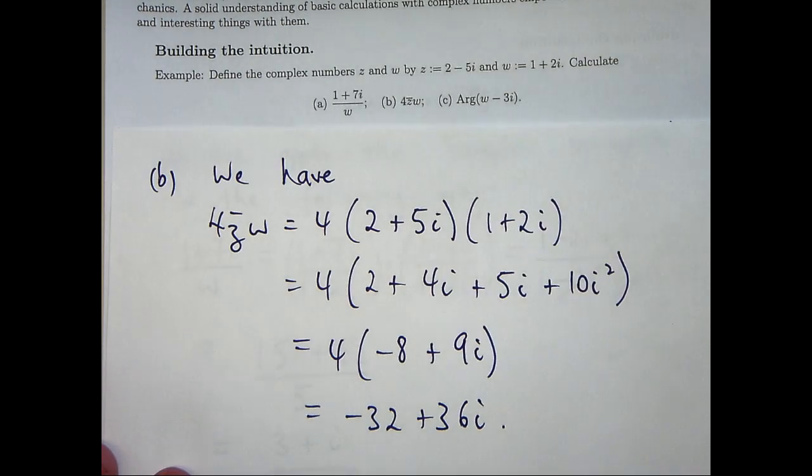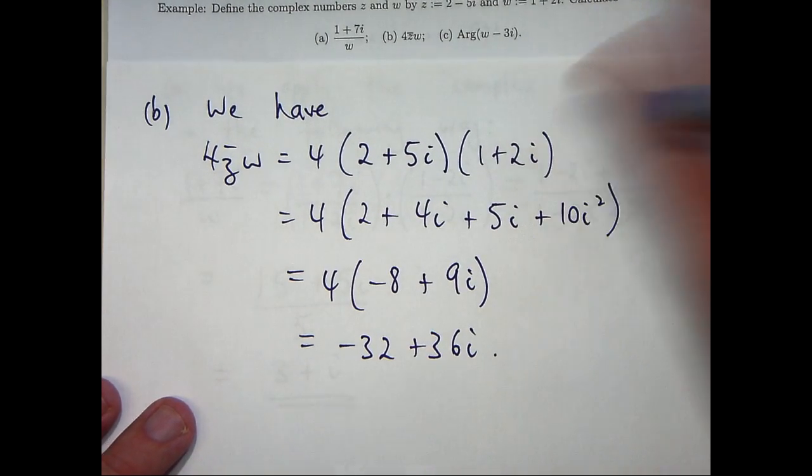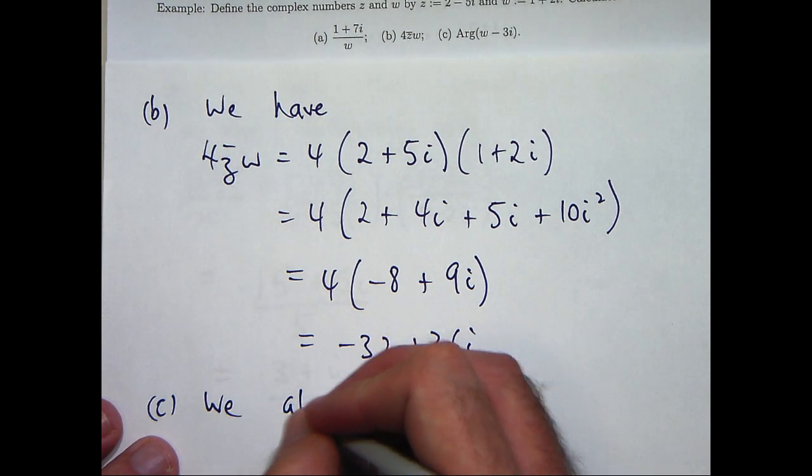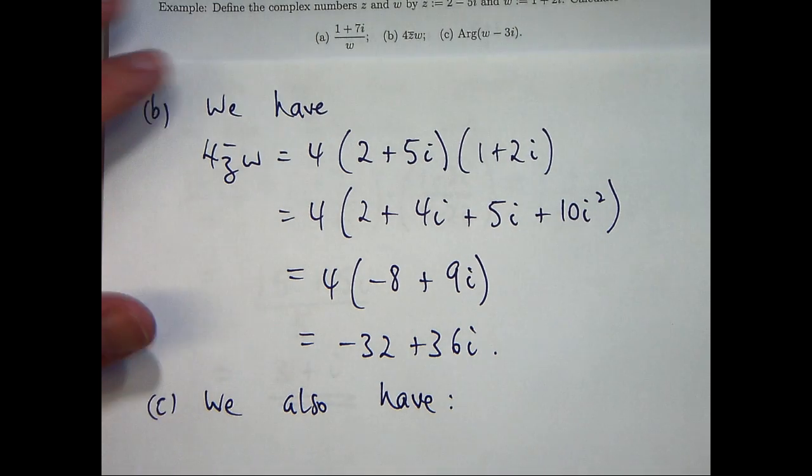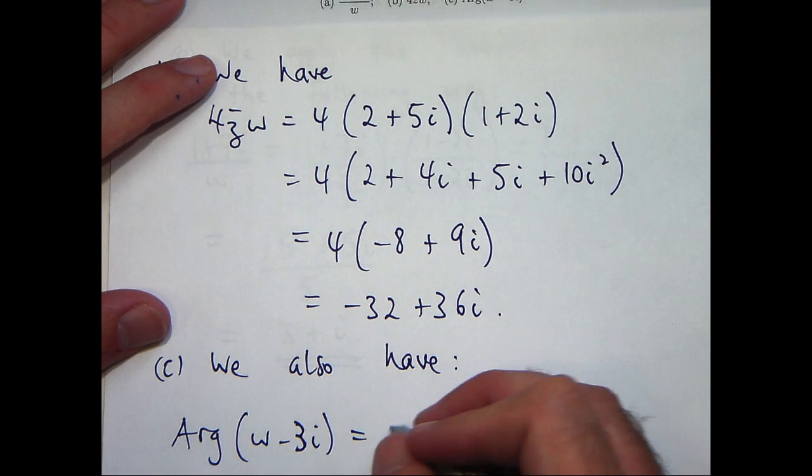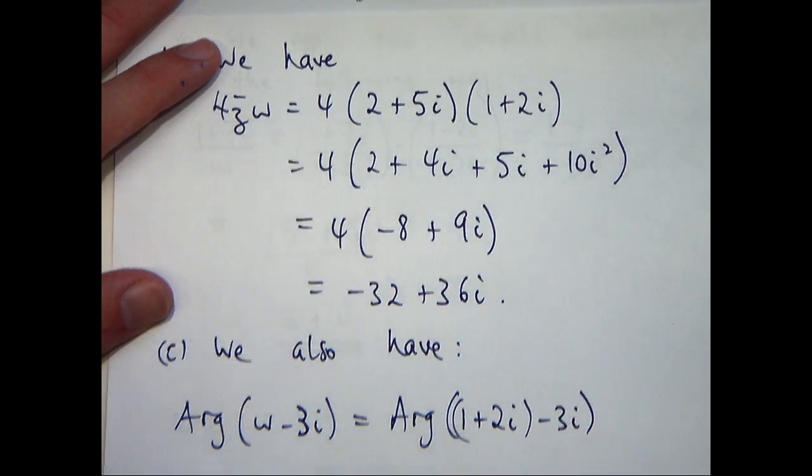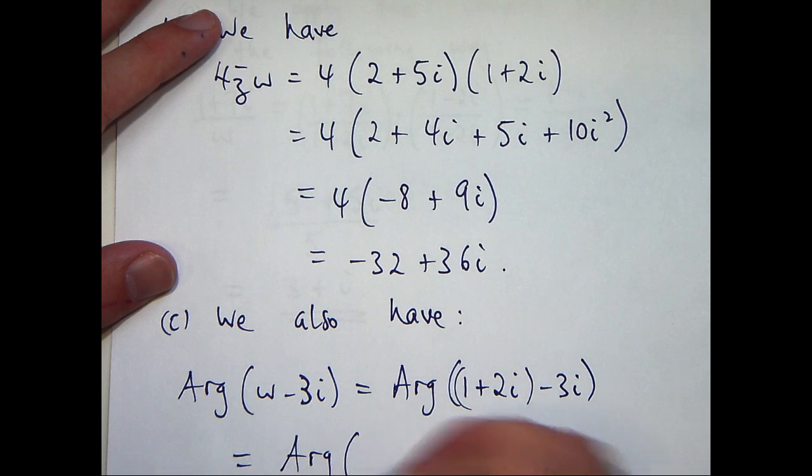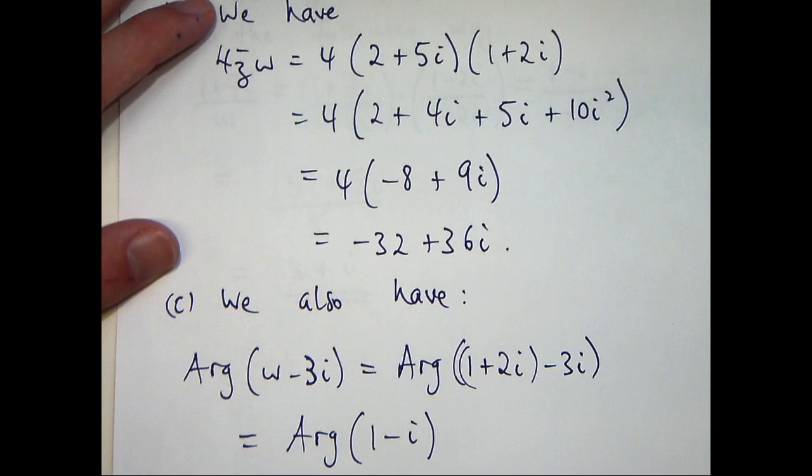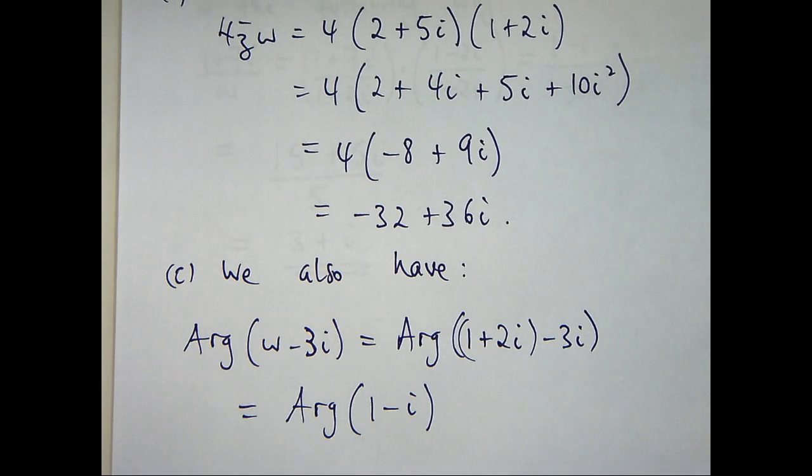Okay lastly we want to calculate the principal argument of the complex number w minus 3i. So how do we do that? So let's simplify w minus 3i first. And I can see that I'm going to get 1 minus i in here. So I'm after the principal argument of 1 minus i. So how can we do that? Now the principal argument is just an angle. And it's a special angle. It has to be strictly greater than minus pi and less than or equal to positive pi.